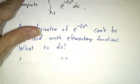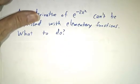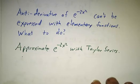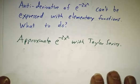But there is an antiderivative. You just don't have an expression for it in terms of elementary functions. The way we get it is we approximate e to the minus 2x squared with a Taylor series.